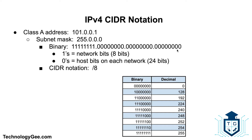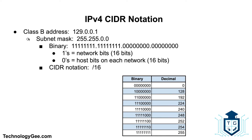As discussed in the previous video on classful addressing, a Class A address has way too many host addresses for the average network — which is why classless subnetting makes things more manageable. The CIDR notation for this address is slash 8, indicating that the first eight bits have been turned on to represent the network. As shown in the chart, eight ones equals 255.